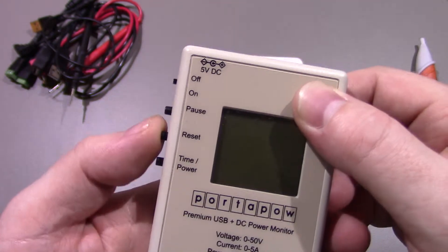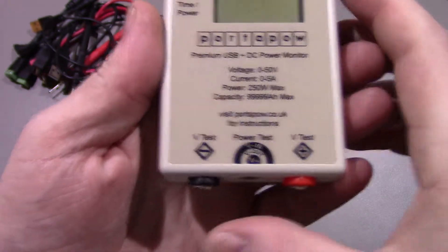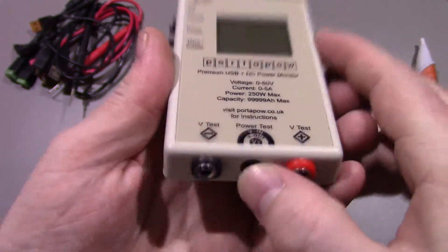You've got on and off switch here, pause, reset, time power. And your test points there, and your barrel jack in the middle, which does your three wire measurements.